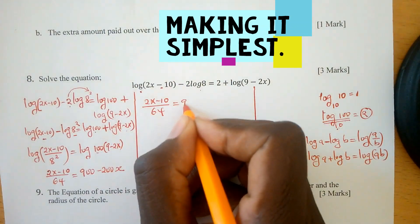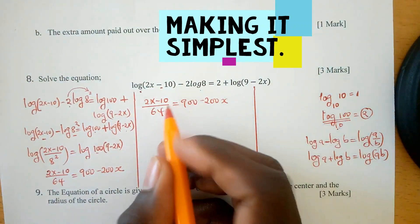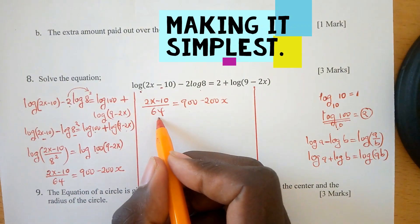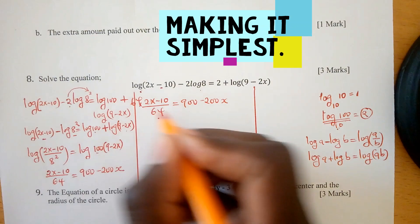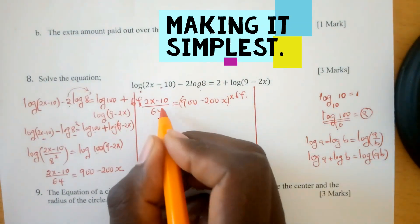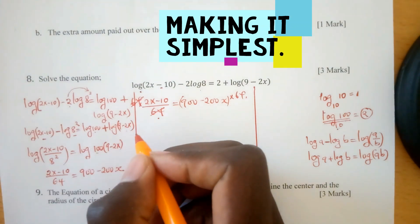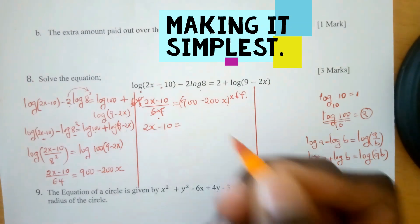We remove this denominator by multiplying both sides by 64. This simplifies to 2x - 10 = 57,600 - 12,800x.